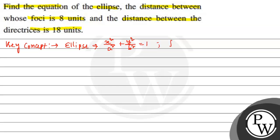And distance between two foci is equal to 2ae. And the distance between the directrices is equal to 2a/e.